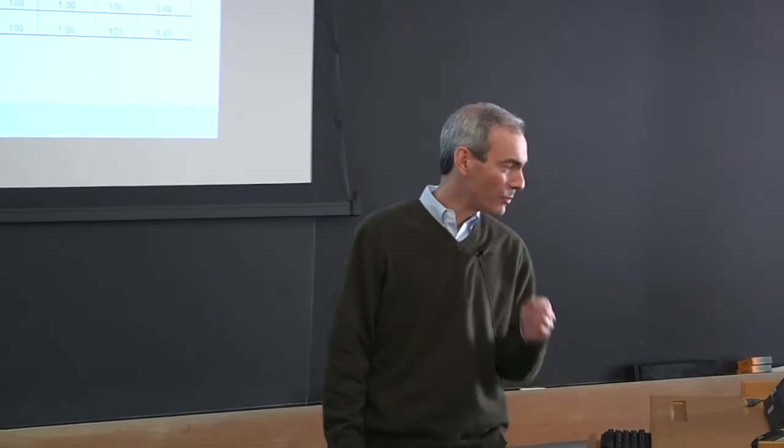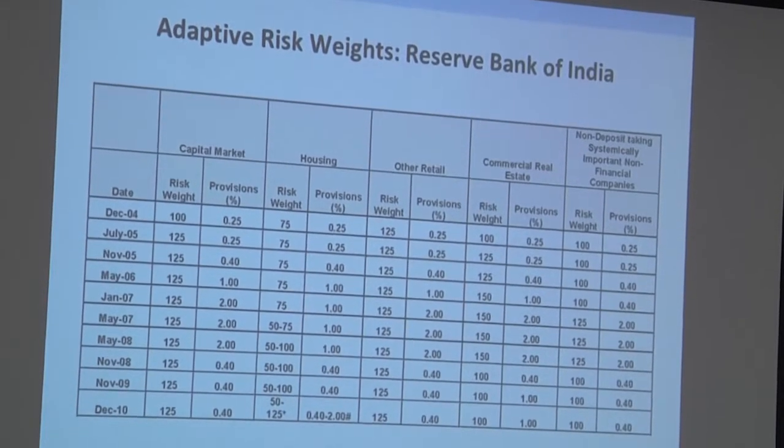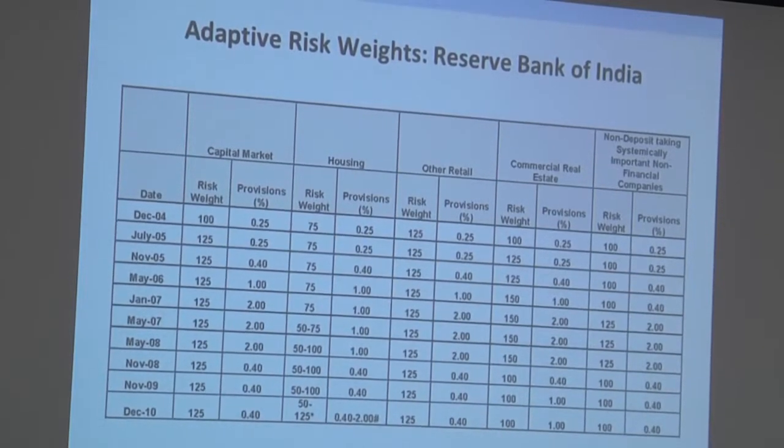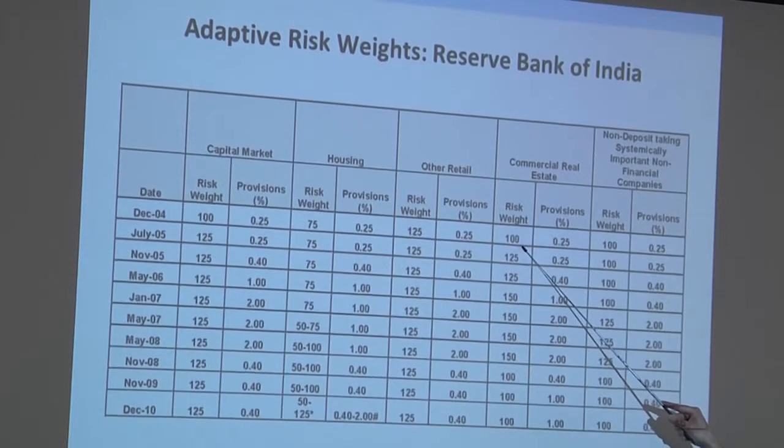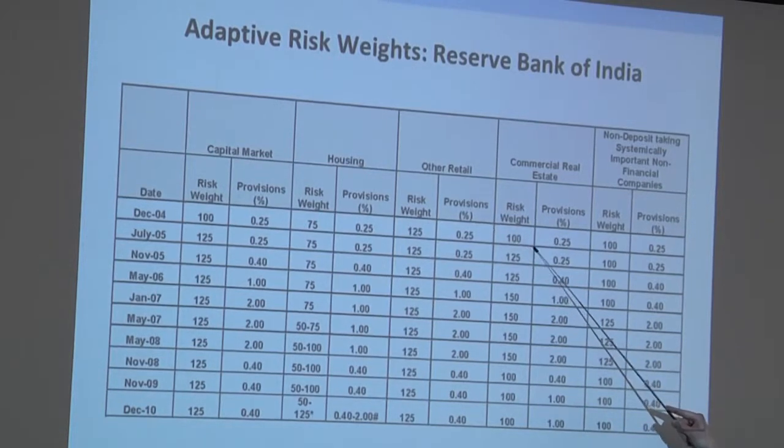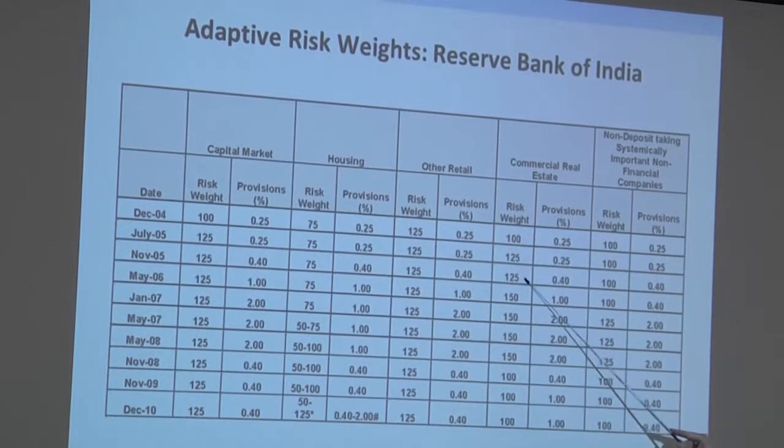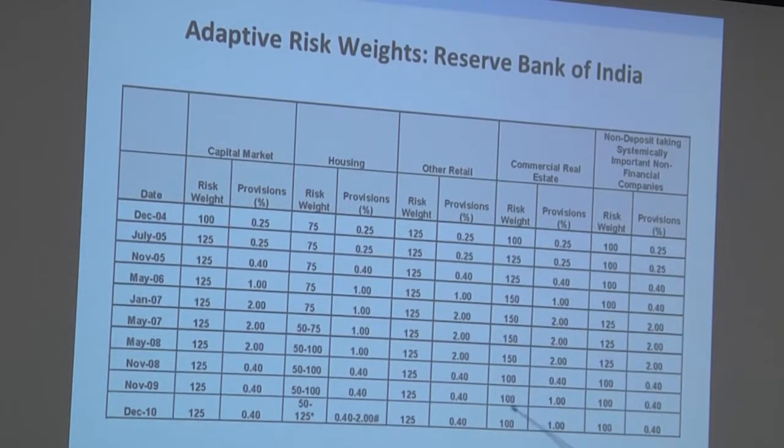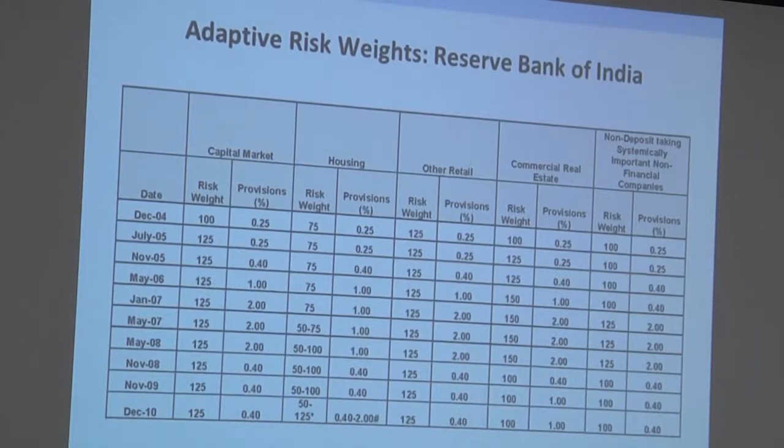Now, after we had written the paper, we learned that the Reserve Bank of India has actually been implementing very much this sort of scheme. So, this is a table from a report that they put out that shows how, over time, in some broad categories, they have adjusted the risk weight. So, for example, in commercial real estate, and if you read the text, you see that they're doing exactly what I described. I mean, the math is different, but sort of the principle is the same, that as they see banks moving heavily into commercial real estate, they increase the risk weight from 100 to 125 percent to 150 percent. Then, post-financial crisis, they actually create a stronger incentive for lending by lowering the risk weight. Similarly, in capital markets activities, you see they increase the risk weight, and so on. So, they actually have a kind of crude version of this model.